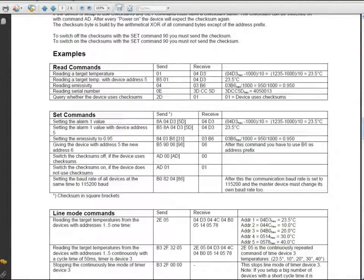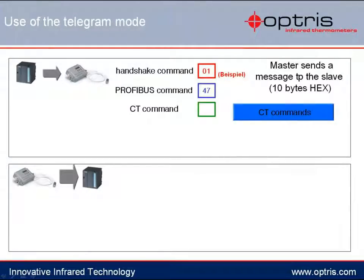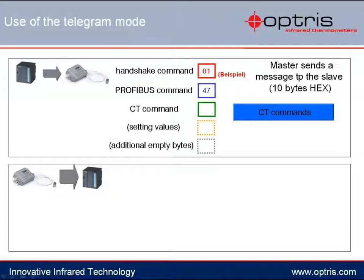With the next bytes, the parameters that need to be changed at the temperature sensor will be sent. These parameters can contain up to 4 bytes. If not only a value is being requested from the sensor but a complete setup change is being performed, the corresponding XOR checksum must also be transferred. In total, 10 bytes must be sent from the PLC to the temperature sensor, and the missing bytes will be filled with zeros. The telegram can only be sent to the temperature sensor in this order.